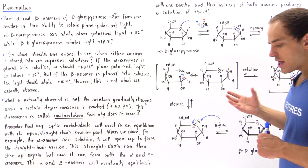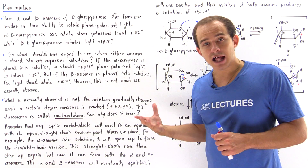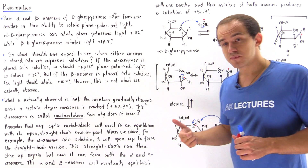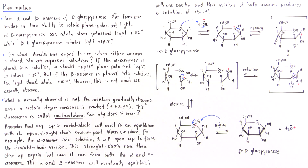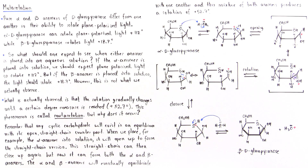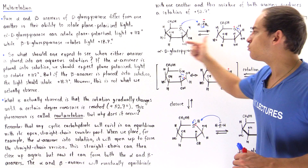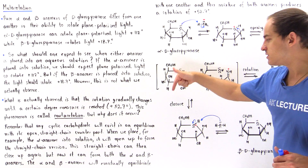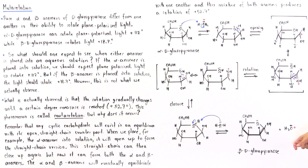We see that as soon as we take our alpha anomer of glucose and place it into the aqueous mixture, a reaction takes place in which our cyclic molecule forms the open straight-chain carbohydrate, which can then either reform the alpha anomer or — via rotation of the open carbocation intermediate — close to form the beta anomer.